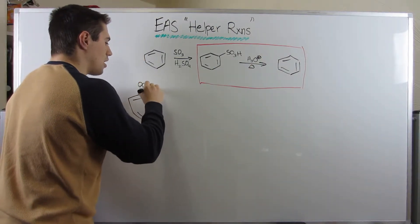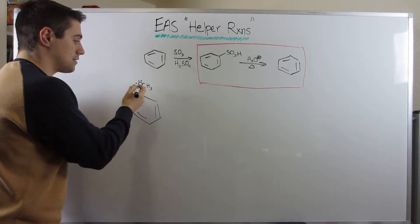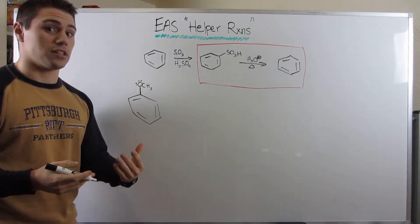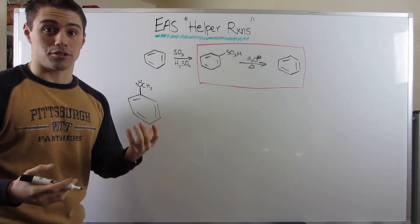So let's just say we start off with our classic methoxybenzene. Remember, we know it's directly attached to the ring. He's an electronegative atom. He has electrons to donate to the ring. He's an electron donating group, as well as an ortho-paradirector.